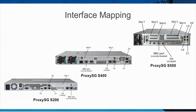When you replace an appliance with a different hardware model, the interface numbering scheme may change. The interface modules, slot, interface labeling, and bridge pair groups on the newer ProxySG appliance models may be different from those of the older models. You may need to verify the interface configuration on your older appliance and perform the necessary adjustments to maintain consistency in your network configuration before restoring your configuration archive onto your new appliance. Specific steps are available in the Migrating to a New ProxySG Appliance Guide on BlueTouch Online.